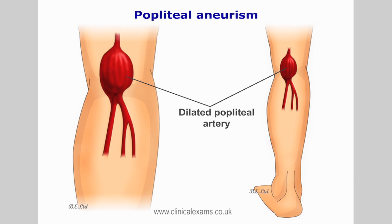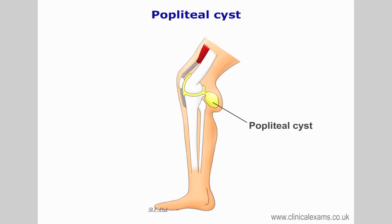Note the presence of an enlarged pulsating popliteal artery, which may signify popliteal aneurysm. A non-pulsating warm tendon mass may indicate venous thrombosis or an inflamed Baker's cyst.